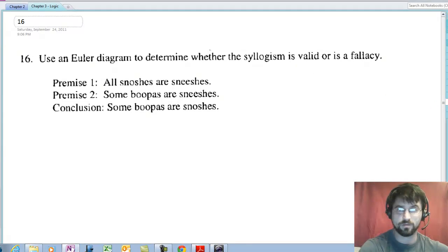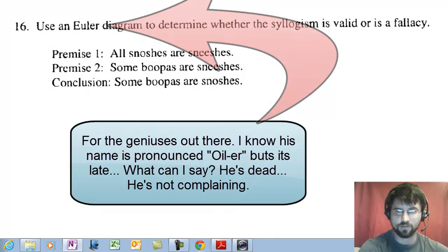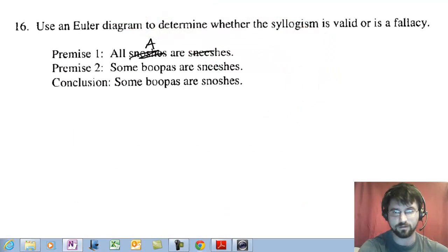Okay, we're going to do this with a Euler diagram. All snoooshes are sneezes. Oh, great. Let's just cross this off and call it all A's are B's. Some C's are B's.